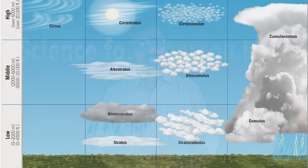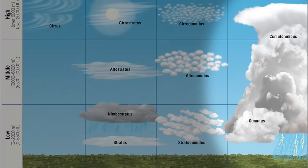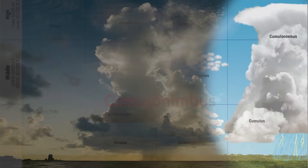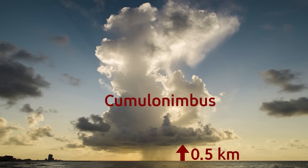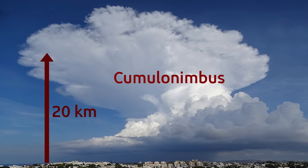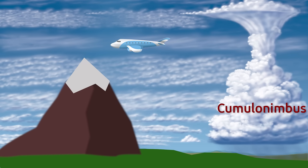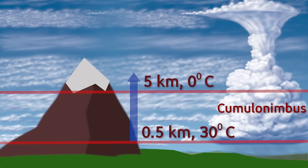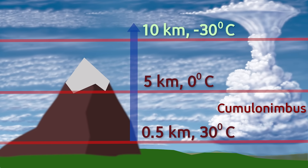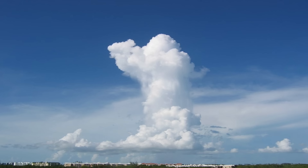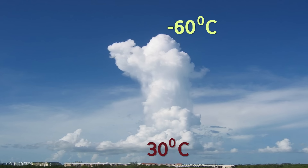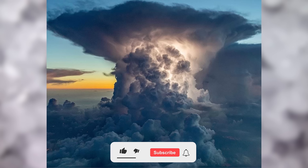We have all seen clouds, but we would not have noticed this king of clouds called Cumulonimbus. It starts from around half a kilometer from the ground and extends like a tower up to 20 kilometers. And believe me, all aeroplanes fly below 20 kilometers. As we go higher and higher in the atmosphere, the temperature reduces and becomes colder. So if the atmospheric temperature at the base of the Cumulonimbus cloud is 30 degrees Celsius, at the top it can go as low as minus 60 degrees Celsius. It is in these Cumulonimbus clouds that hailstones are formed.